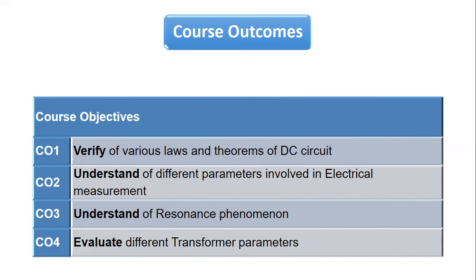The third outcome is that you would be able to understand the resonance phenomenon. There are certain experiments in this lab related to resonance. In theory classes, it will be taught what resonance is and how it is achieved, and the practical experiments related to resonance are included in the lab. The last outcome is that you would be able to evaluate the transformer parameters — what a transformer is, its various windings, how they operate, what tests are performed on transformers, and the purpose of those tests.